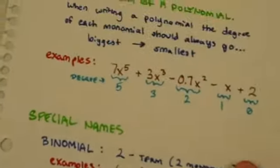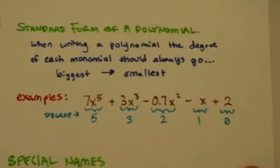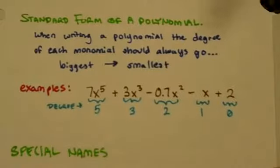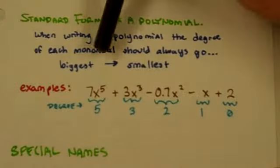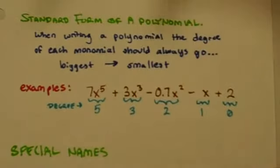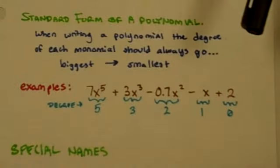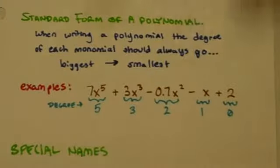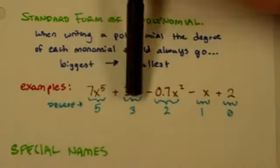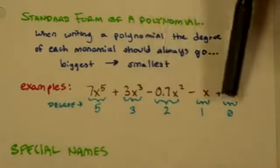Next up is something called the standard form of a polynomial. When you're writing a polynomial the degree of each monomial should always go from biggest to smallest. It's called the standard form and your answer always needs to be in standard form. Your final solution always needs to be in standard form. If you look at this very long polynomial right here, notice this is a five term polynomial.